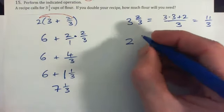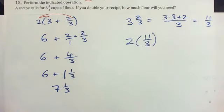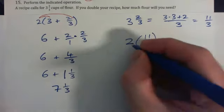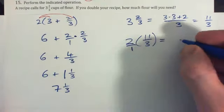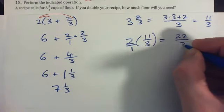And so we could simply go twice eleven-thirds, right? Which is like two over one times that, which gives two times eleven, twenty-two, over one times three, three.